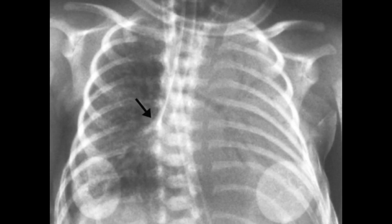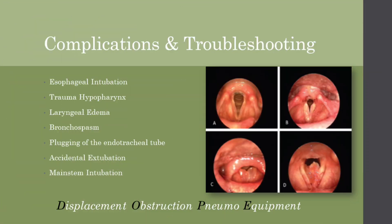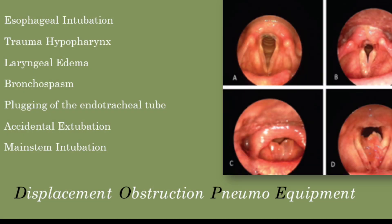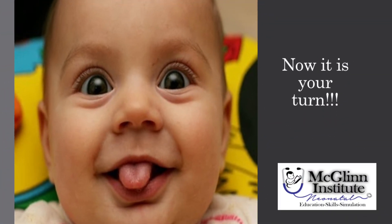Proper ET tube placement will help prevent right main stem intubations and eventual pneumothoraces. Besides main stem intubation, you can also have esophageal intubation, laryngeal trauma or edema, bronchospasm, as well as accidental extubation. When troubleshooting an ET tube, make sure to use the DOPE mnemonic: Displacement, Obstruction, Pneumo, or Equipment.